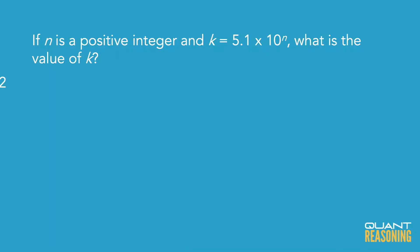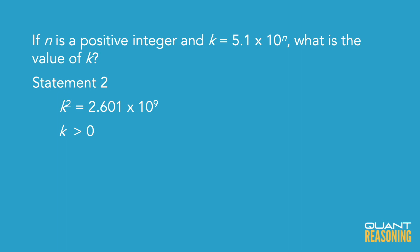Statement 2 gives us the value of k squared. Under normal circumstances, knowing the value of something squared is not enough to infer the underlying number, because we don't know which side of zero it came from. But remember, in this case we inferred from the free info that k must be a positive integer. So knowing the value of k squared is sufficient to answer the question, and we can eliminate answer choices A, C, and E.